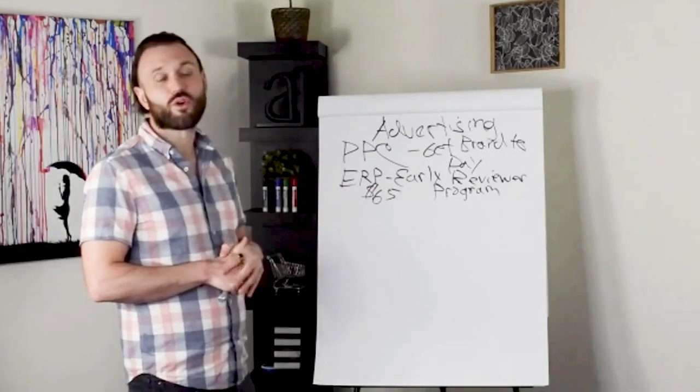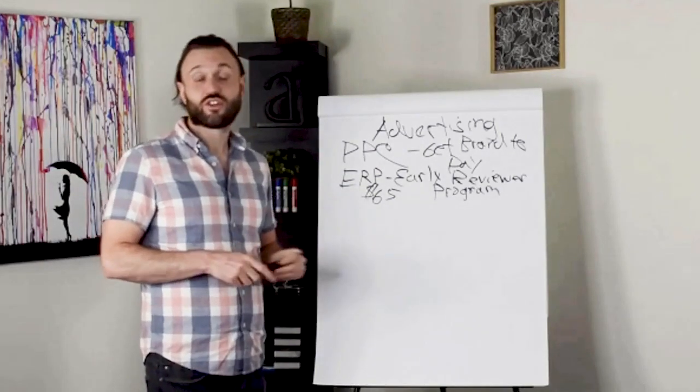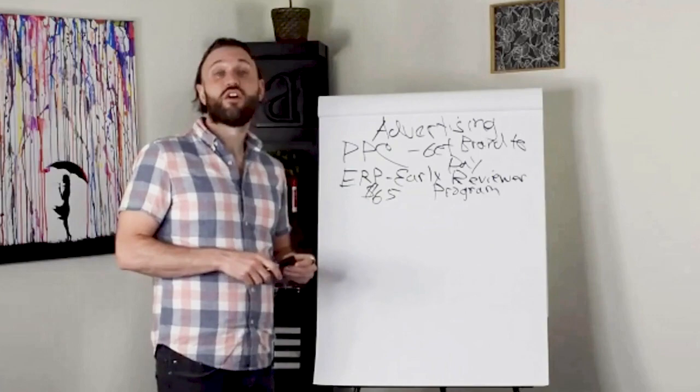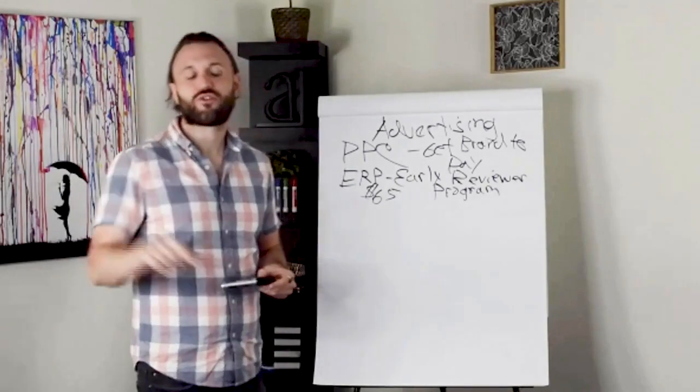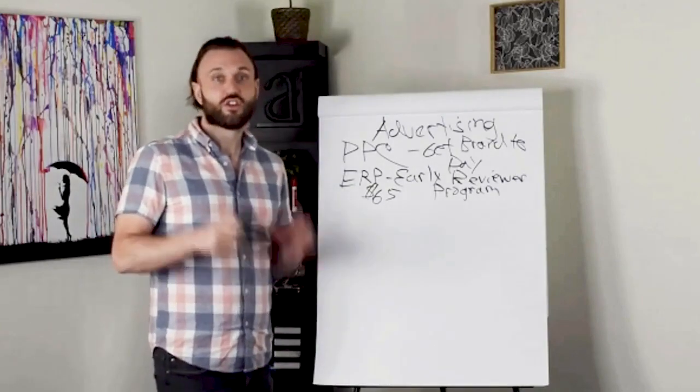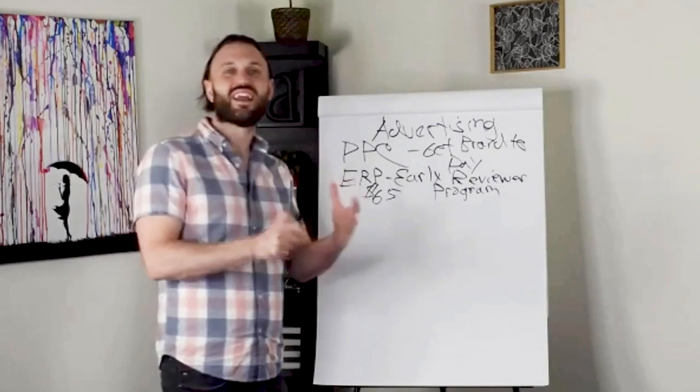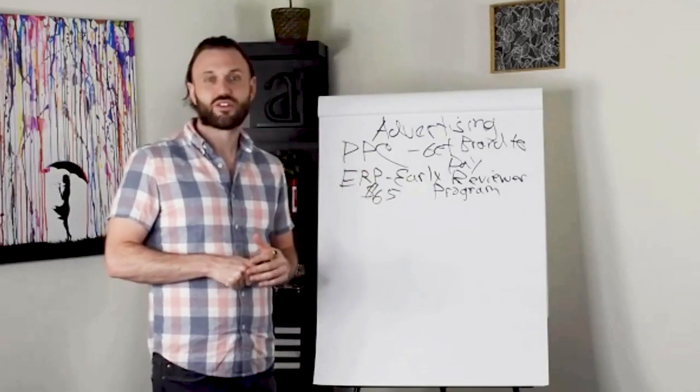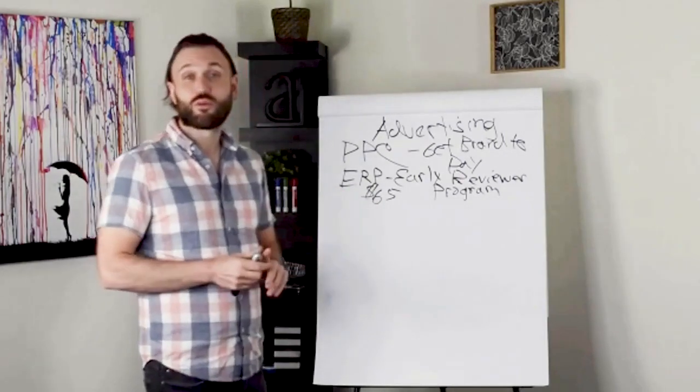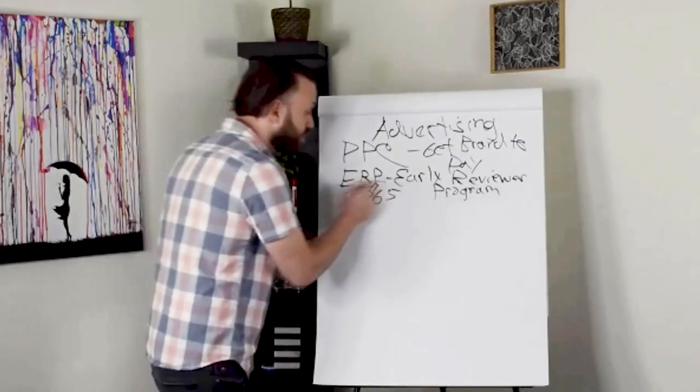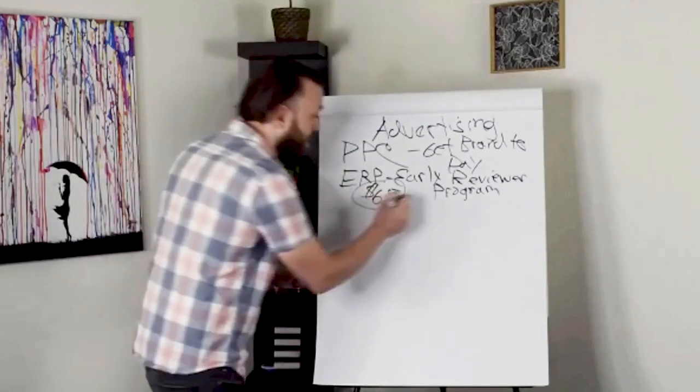So the early reviewer program is huge for getting reviews. Now, there's a few stipulations. The early reviewer program will run for an entire year or until you receive your first five reviews for that product. So as soon as you receive your first five reviews, Amazon will stop sending out those value proposition emails or if it runs for an entire year.